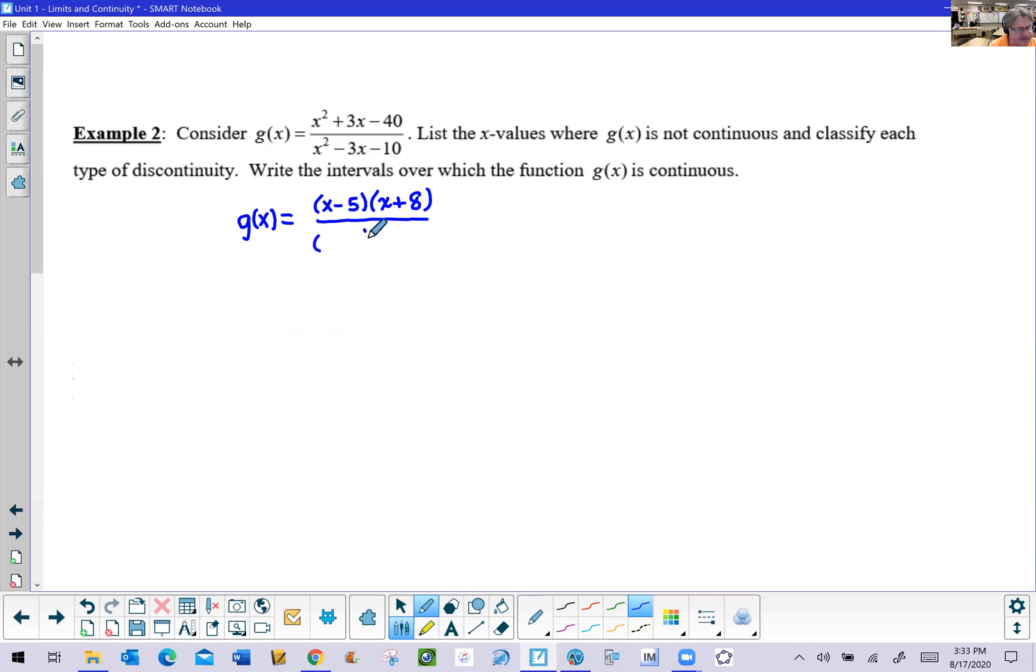And then the denominator is going to factor into x and x, probably go with a 5 and a 2 in order to make that 10, although one needs to be negative and one needs to be positive. But in order to get this negative 3x in the middle, that 5 is going to take on the negative value, and the 2 is going to be the plus. And then what we determine here is eventually a couple of things are going to cancel, and we get x plus 8 over x plus 2.